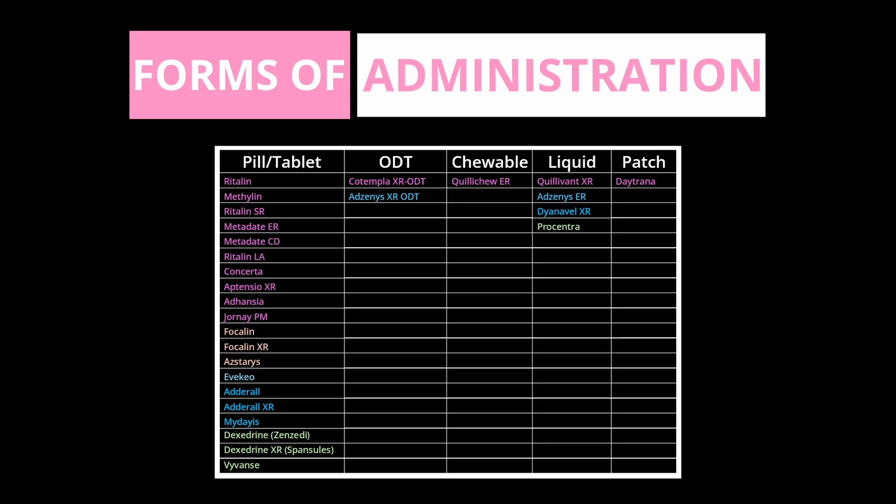Formulations that come as just dexmethylphenidate include Focalin, Focalin XR, and Asterys. This brings us to the third way stimulants differ: their form of administration. Manufacturers have made stimulants available in a ton of different routes — pills and tablets, orally dissolving tablets, chewables, liquids, and patches. Changing the form of administration can potentially extend patent protection — a strategy used by pharmaceutical companies.